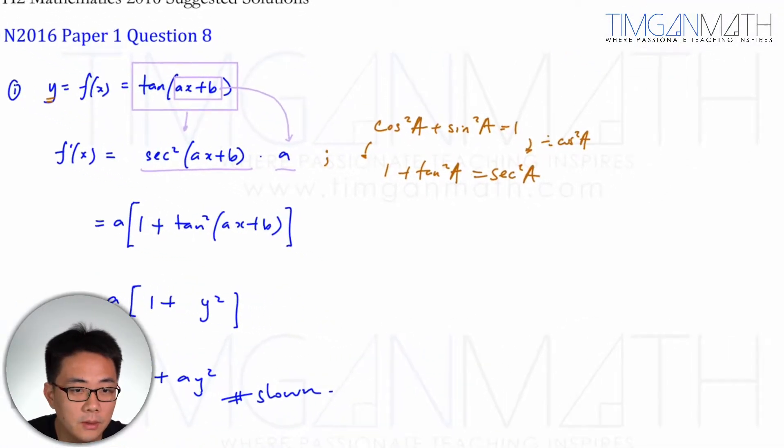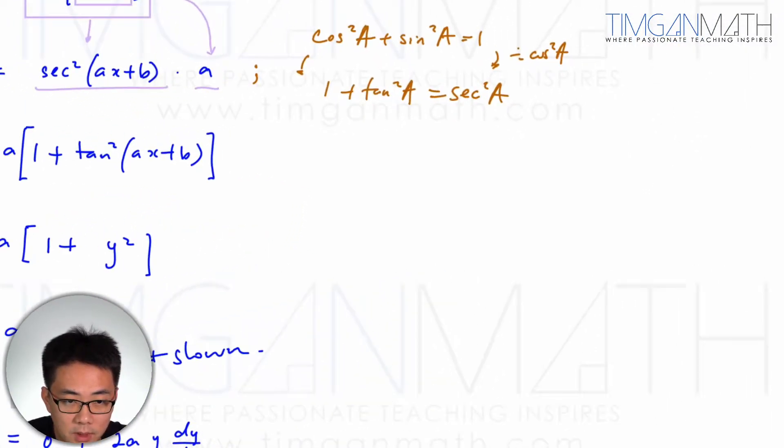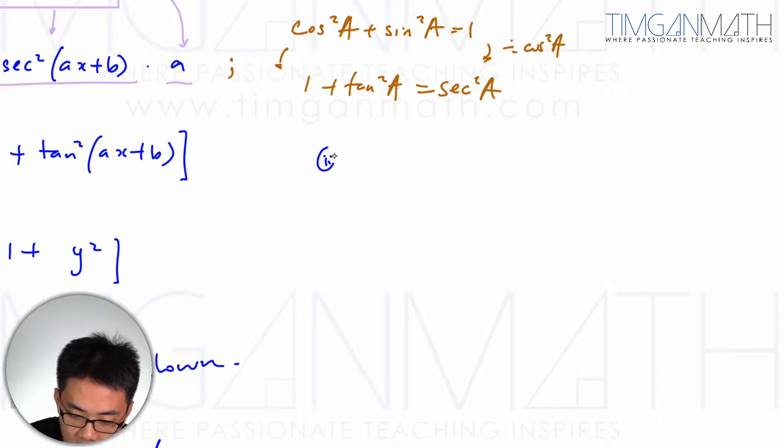So let's look at part 2. Part 2 in the case where you're given that b is equal to one quarter π.